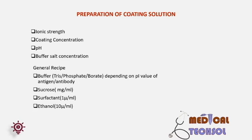General recipe for the coating solution: first, tris-phosphate or borate buffer — depending on the pI value of the antigen or antibody, we need to select the buffer; second, sucrose; third, detergent or surfactant; fourth, ethanol. Concentration of these components may vary from product to product. These chemicals provide stability, wetting, better sample release, and a uniform band or dot on the membrane.